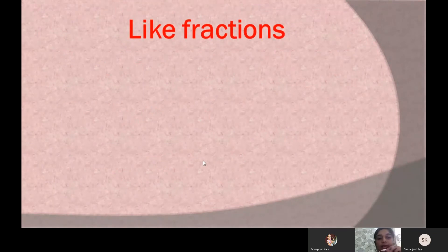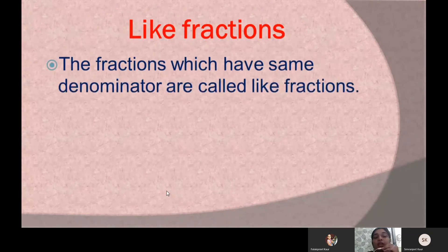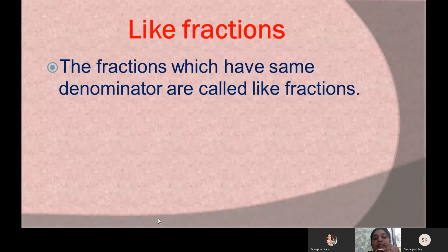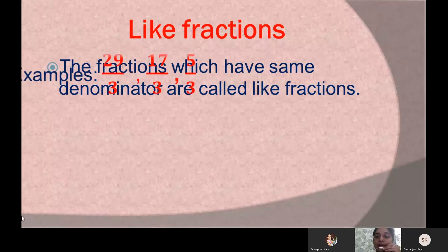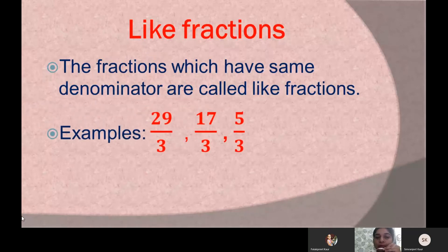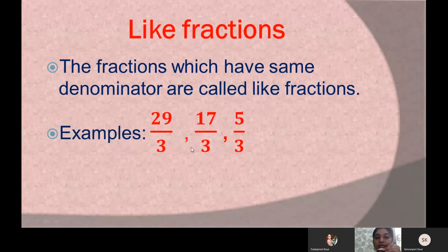Now let us learn about like fractions. Like fractions are those fractions in which the denominators are the same — it means the number in the bottom of each fraction will be the same. For example, we are having the fractions 29 by 3, 17 by 3, and 5 by 3. Here, in each fraction, we have 3 in the denominator, so these three fractions are called like fractions.